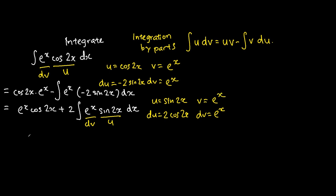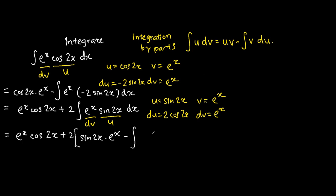We once again apply the integration by parts formula. It will be plus 2, in square brackets: u is sine 2x, v is e to the power of x, minus the integration of v du where v is e to the power of x and du is 2 cosine 2x. Simplifying the formulas, we get e to the power of x cosine 2x.